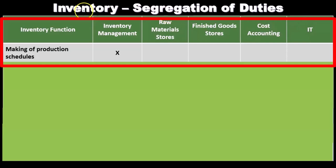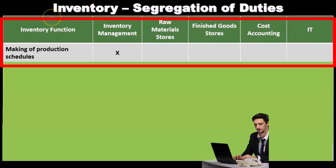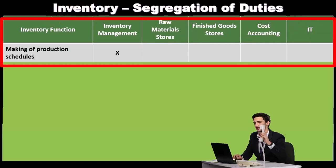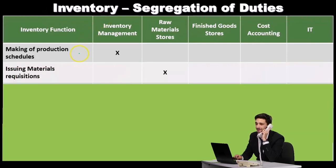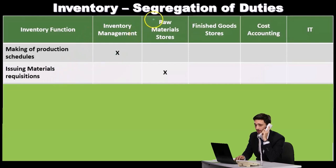The first function is the making of production schedules, which falls under inventory management. Next, issuing the materials requisition is handled by the raw materials stores — a separate area.